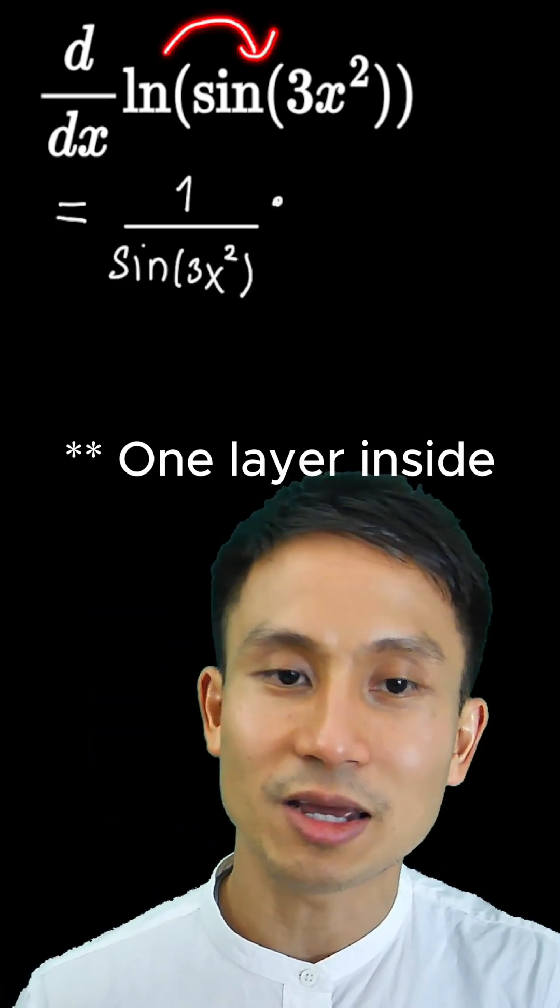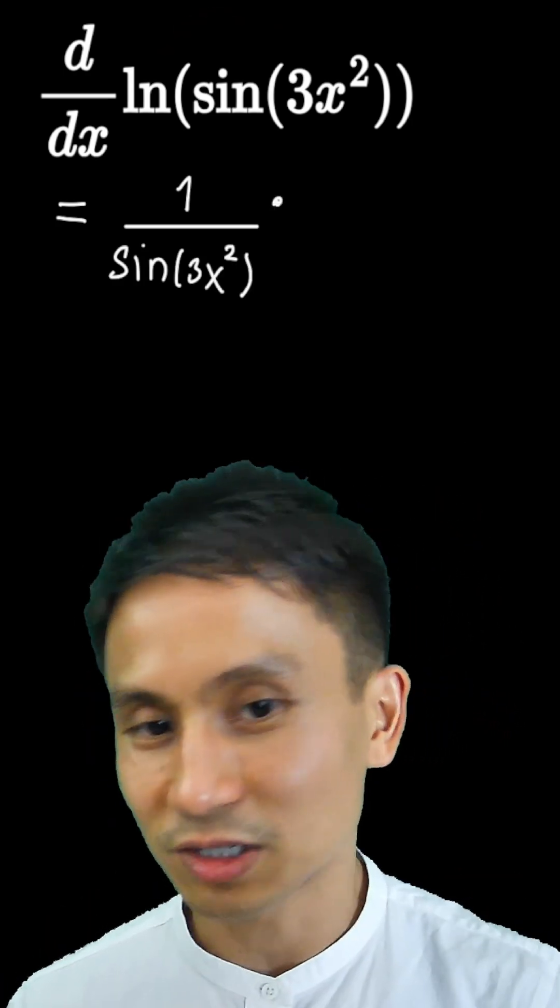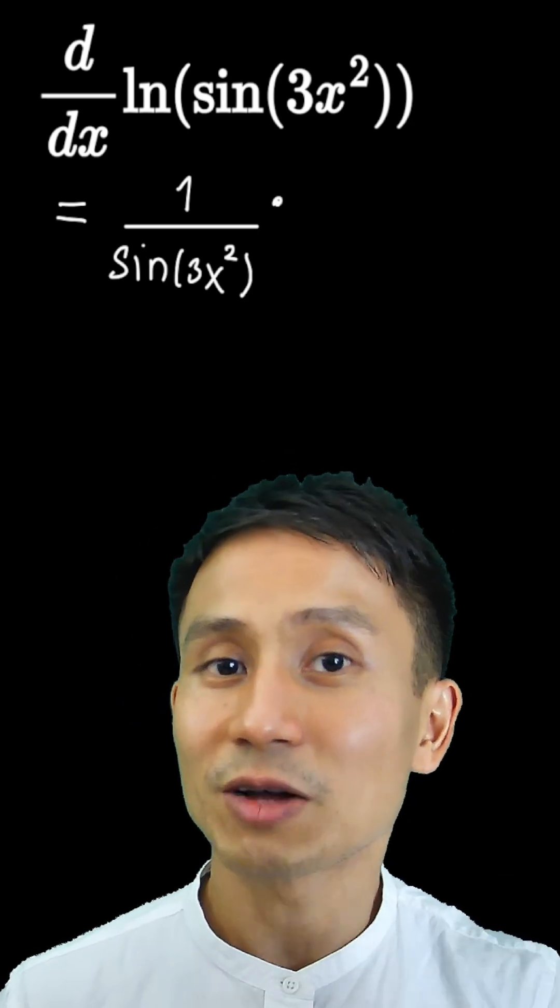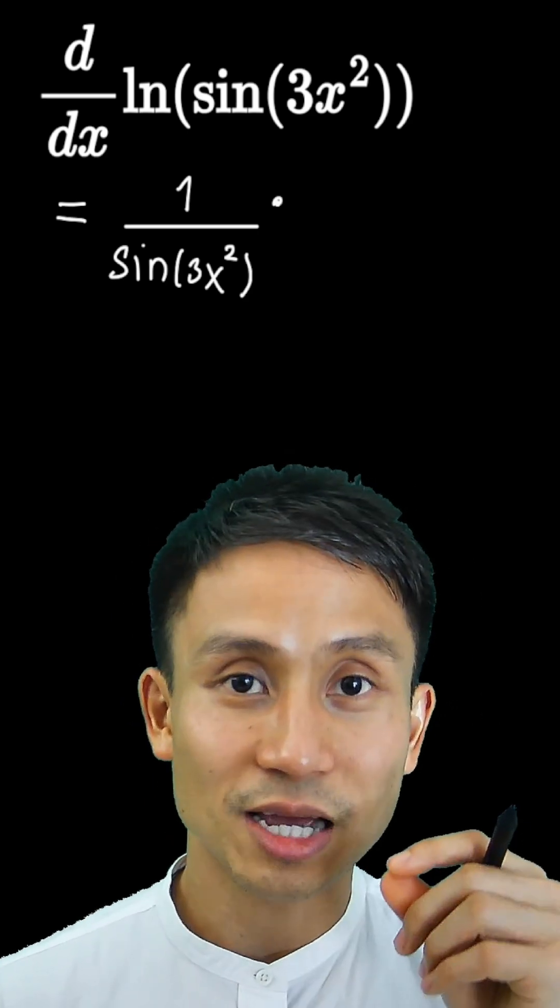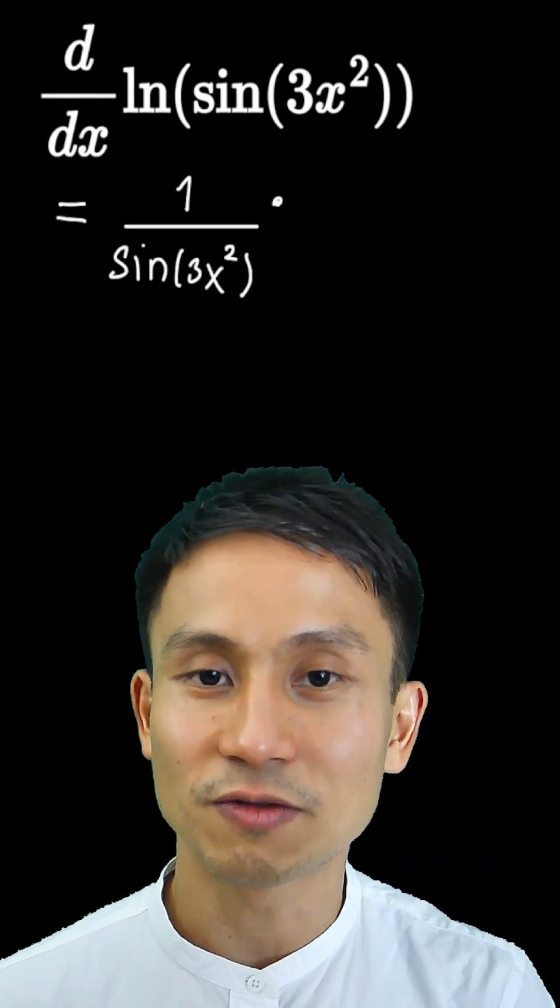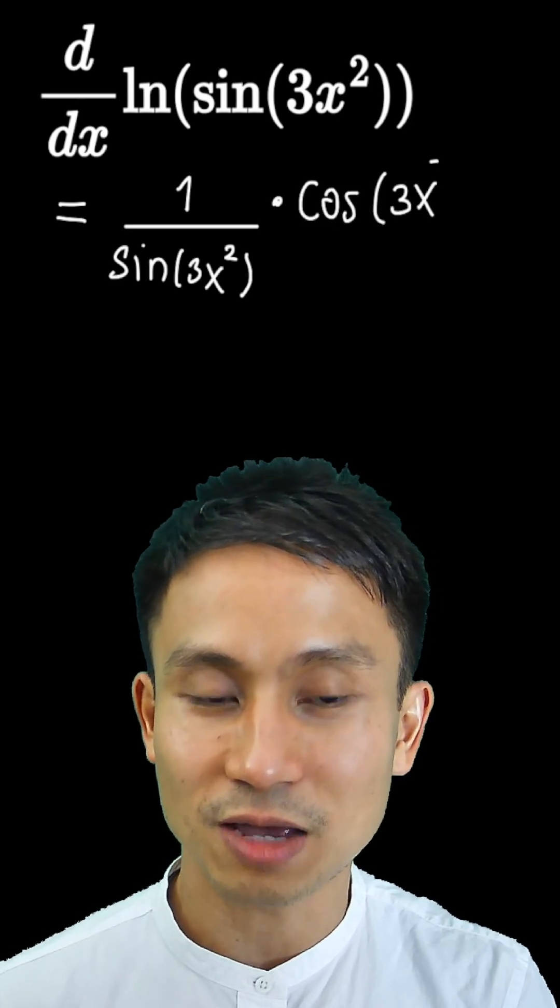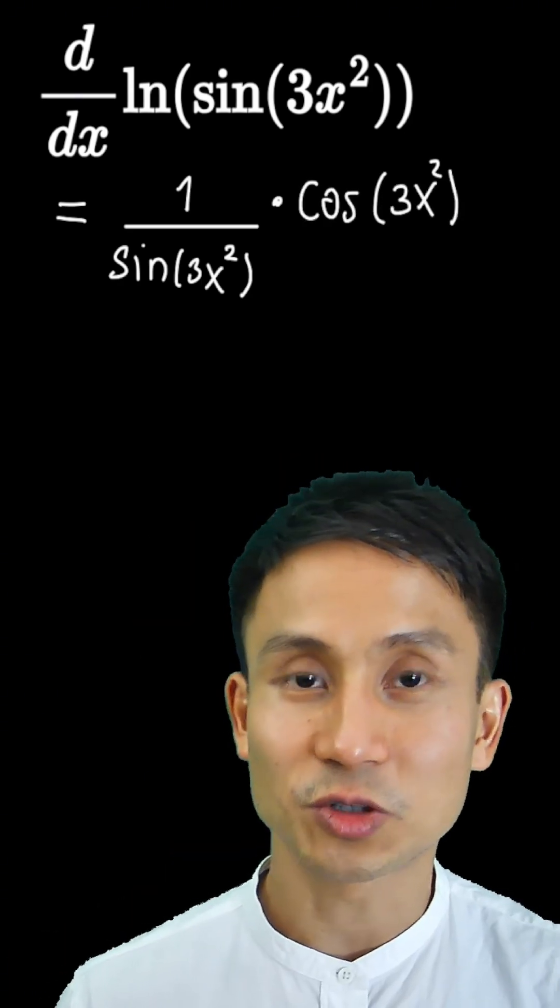And then when we go one layer inside, we see sine of 3x squared. We need to differentiate from the outside in again. So we differentiate the sine function here, which should give us a cosine where the inner part is still kept the same. So that is just 3x squared inside.